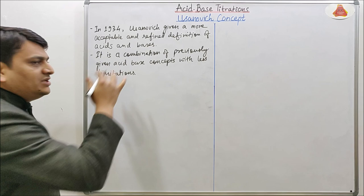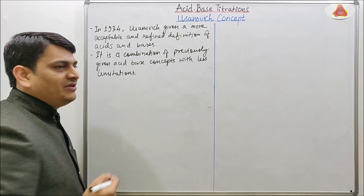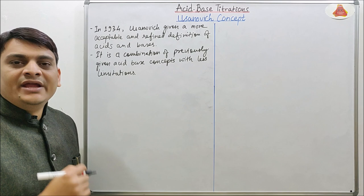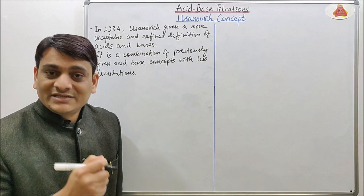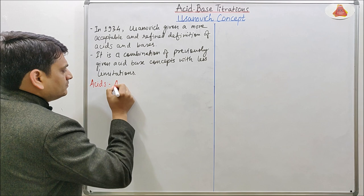The Usainovich concept was given in 1934 and it is a combination of previously given acid-base concepts like Arrhenius concept, Brønsted-Lowry concept, and Lewis concept. According to this concept, acids are those chemical species which can react with a base, can donate cations, or can accept anions or electrons.